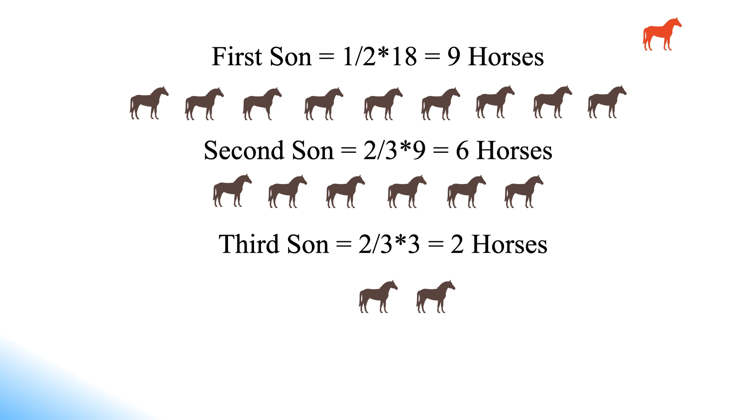So the first son gets 9 horses, the second one gets 6 horses, and the third son gets 2 horses, all because of adding your own imaginary horse. So by following this trick, this puzzle can be solved easily with all conditions satisfied.